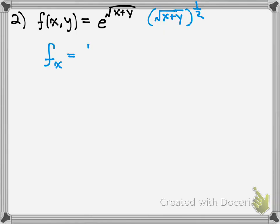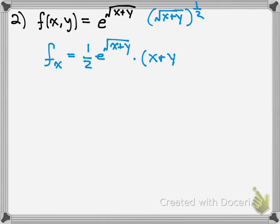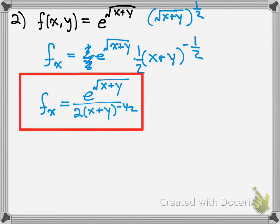Using the power rule, you would bring out the one half, and leave e to the x plus y here. Since it's chain rule, you've got to take the derivative of what's on top too — that's where that one half came from — and then you would have x plus y to the negative one half. To write this simpler, the one half should go here, and that is your answer.